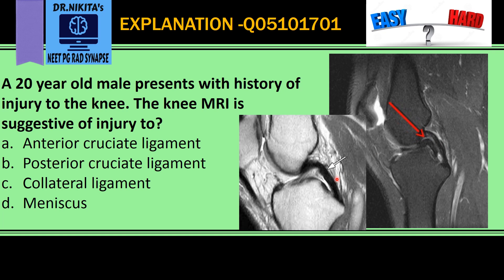That is how a normal PCL, or posterior cruciate ligament, looks — it is like a dark band present posteriorly, connecting the femur and the tibia.